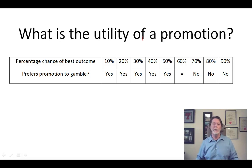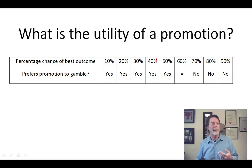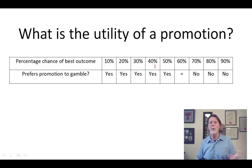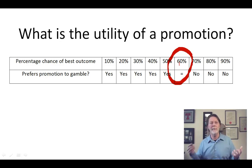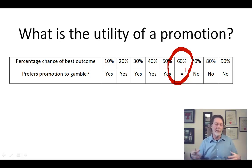For example, you're offered a promotion and asked what sort of gamble you would take. Would you take a 40% chance of getting everything you could possibly want, or would you rather have the promotion? You might say 40% isn't enough — you'd rather have the promotion. You go on until you find the point at which you're indifferent between a 60% chance of getting everything you could possibly want and the promotion. Then 60 is the intensity of the preference for the promotion. Whether that's a good system and whether it can be applied in all cases is a difficult question.